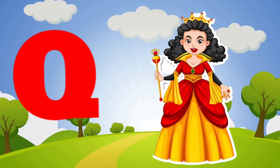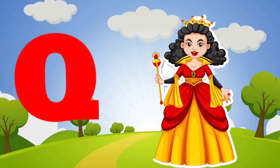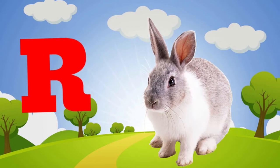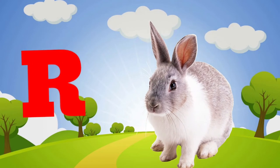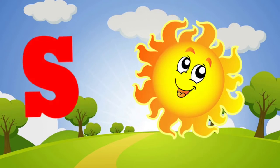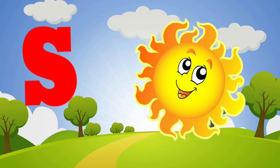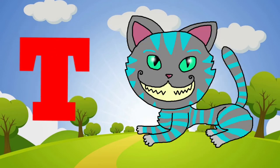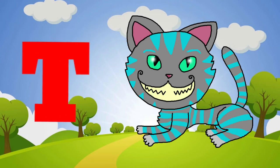Q is for queen, c-c-c-queen. R is for rabbit, r-r-rabbit. S is for sun, s-s-sun. T is for toad, t-t-toad.